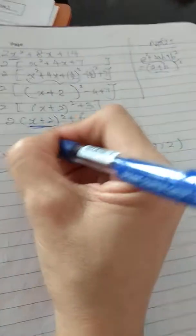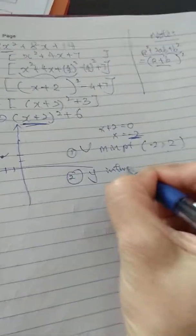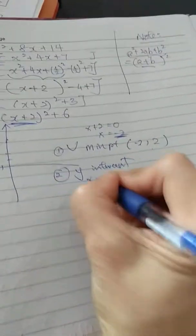We need to go to the second point, which is to find the y-intercept. To find the y-intercept, you just simply put x equals 0 into the equation.